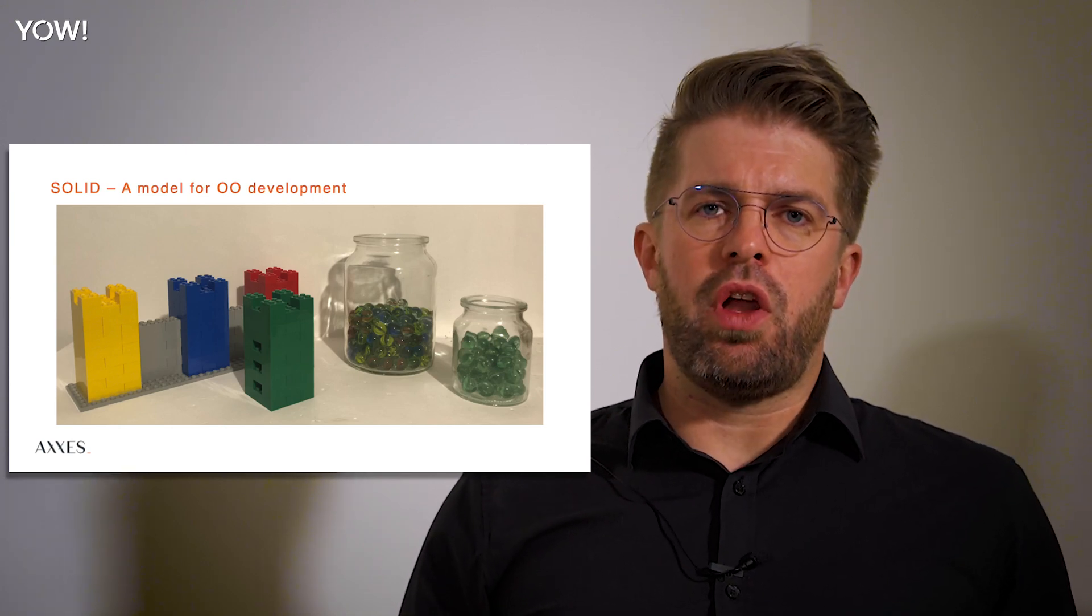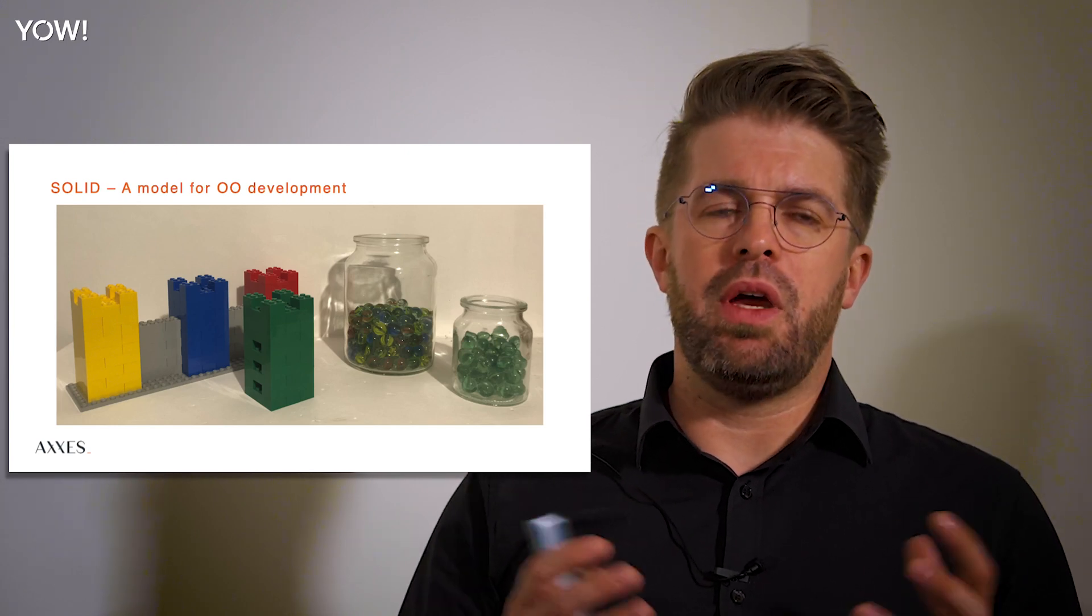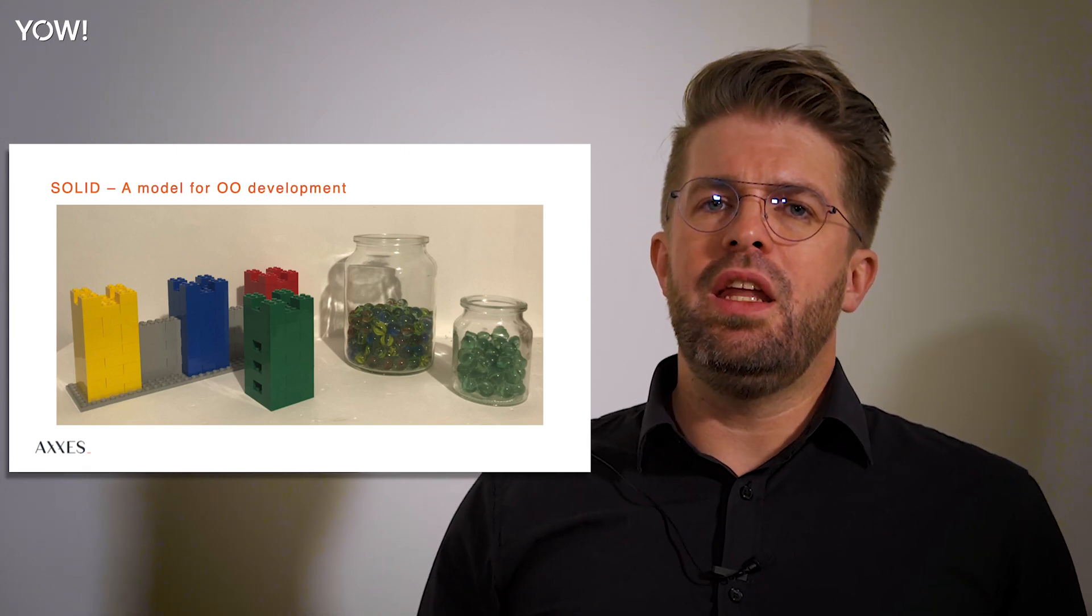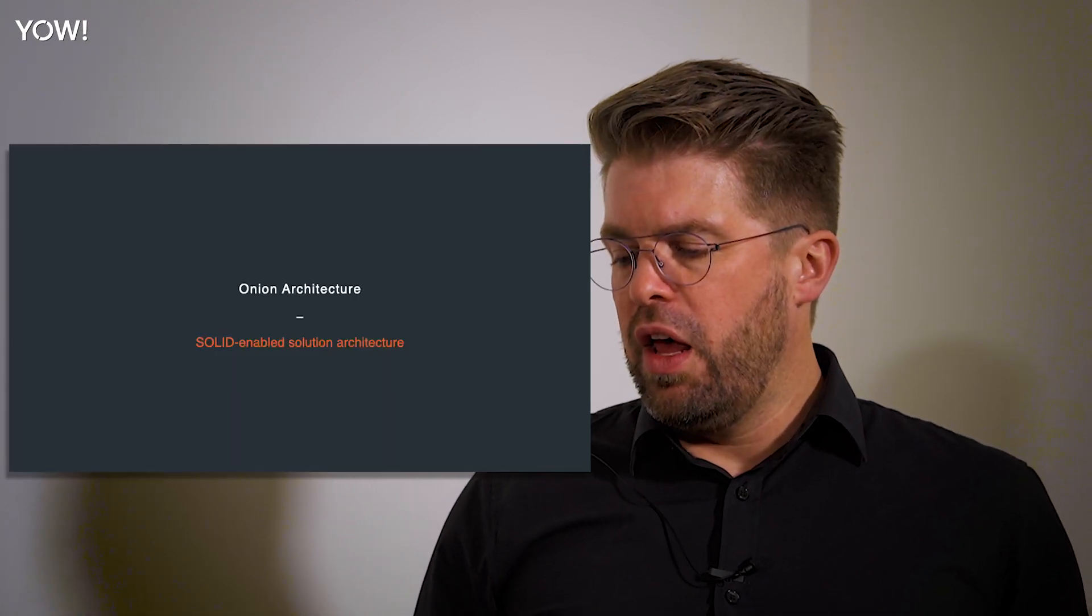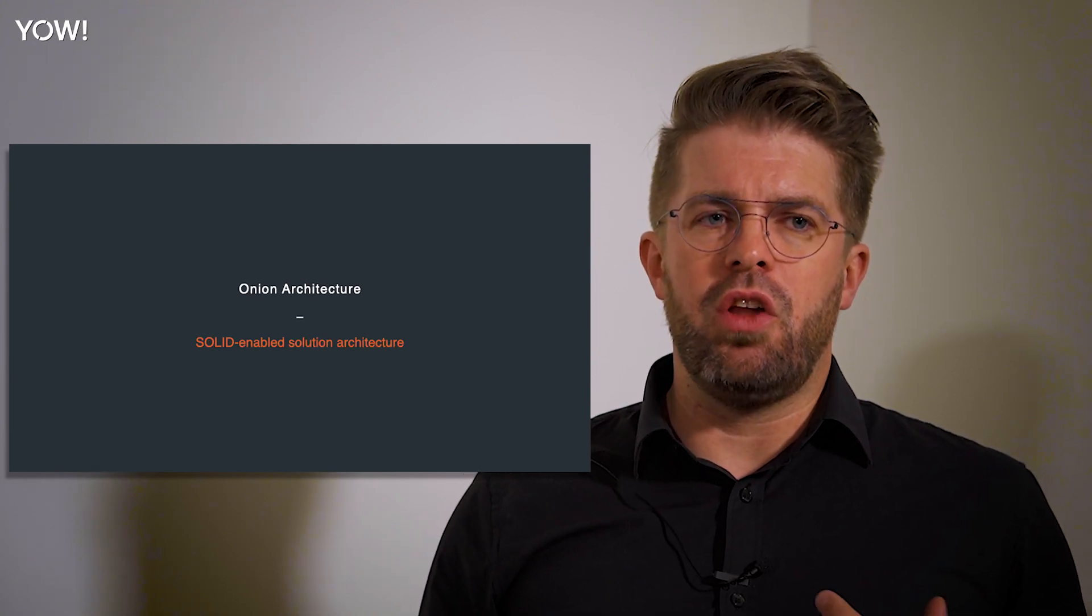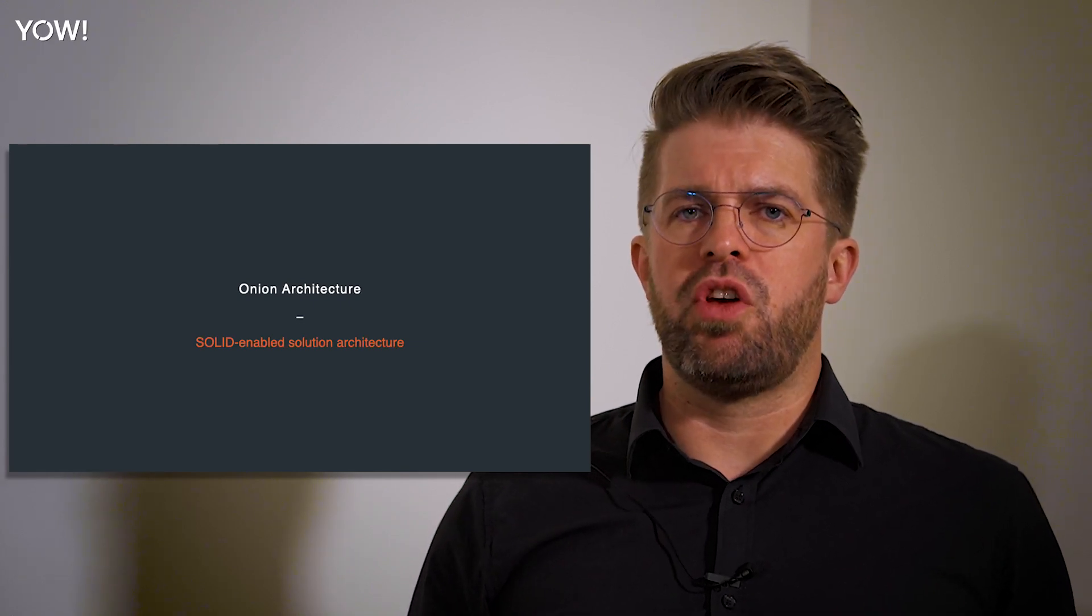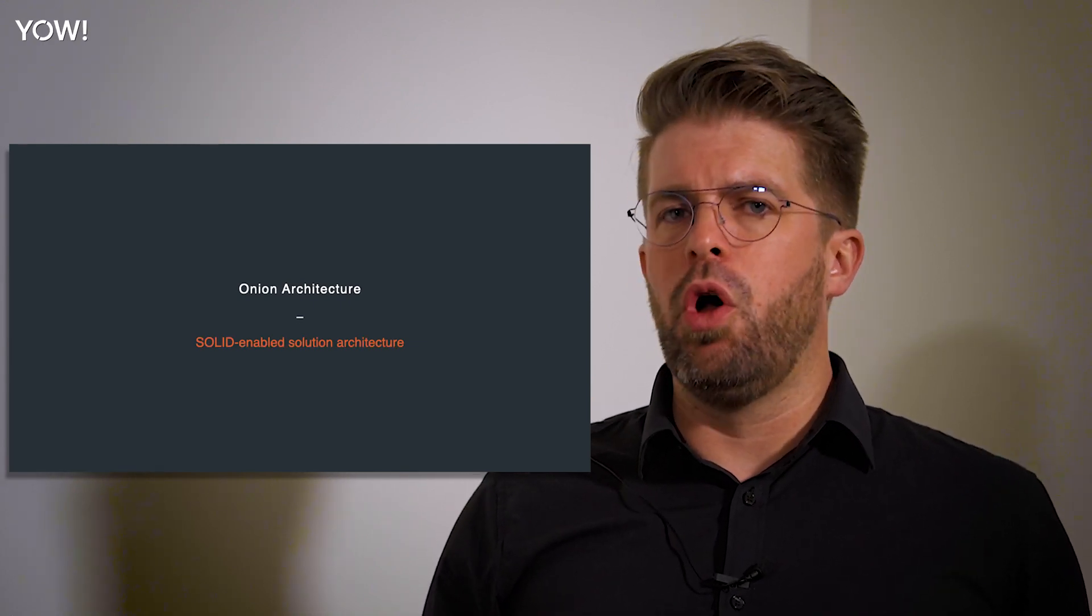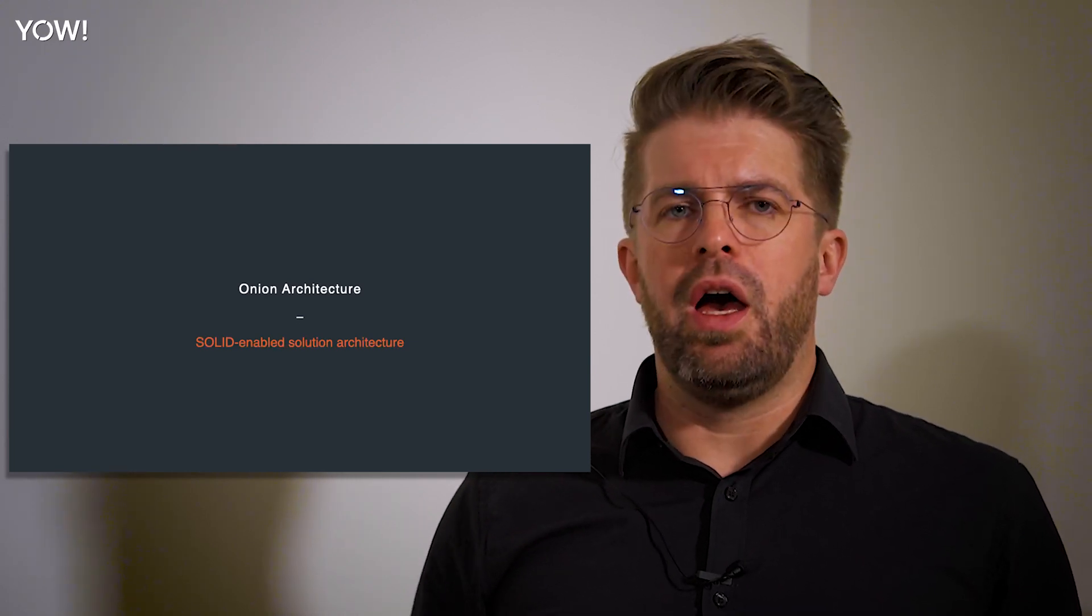Now if you want to put your SOLID code, which is probably the core of your business logic, into a bigger application, you're going to need an architecture that encourages you to be SOLID. For me that is found most in onion architecture. Onion architecture is a term that comes from Jeffrey Palermo, but you may know it as clean architecture or ports and adapters or hexagonal architecture. All these things talk about very similar concepts with different nuances.